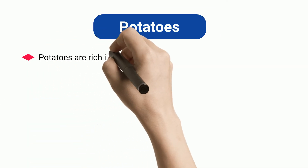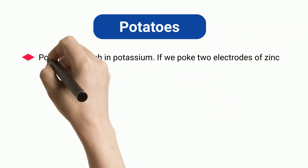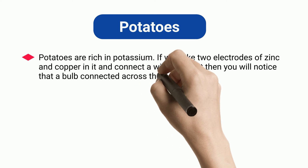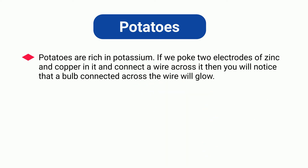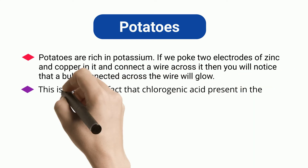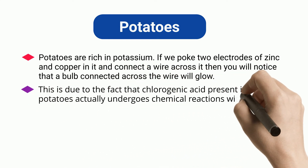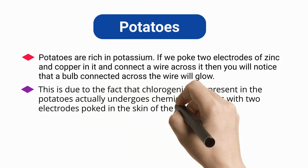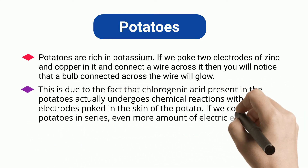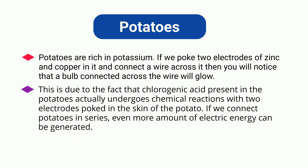Potatoes: Potatoes are rich in potassium. If we poke two electrodes of zinc and copper into a potato and connect a wire across it, a bulb connected across the wire will glow. This is due to the fact that chlorogenic acid present in the potatoes undergoes chemical reactions with the two electrodes poked in the skin of the potato. If we connect potatoes in series, even more electric energy can be generated.